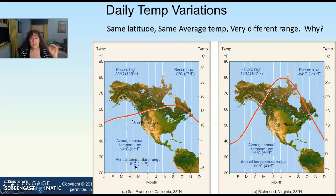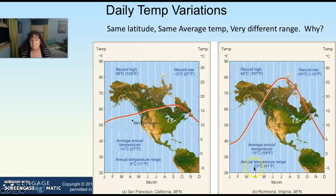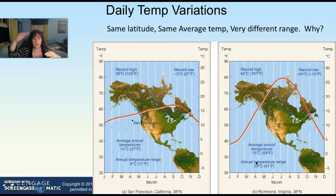San Francisco's range from January through to December is only about 6 degrees Celsius, about 11 degrees Fahrenheit, between the lowest January temperature and highest July temperature. Conversely in Richmond, there is a very dramatic difference in range — about 41 degrees Fahrenheit, about 23 degrees Celsius between the lowest January temperature and highest July temperature.